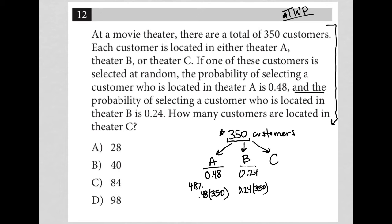Next, it says, how many customers are located in theater C? Okay, so then a couple of ways to do this. First of all, if 0.48 or 48% are in theater A and 0.24 or 24% are in theater B...